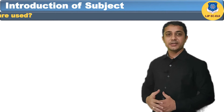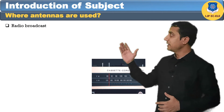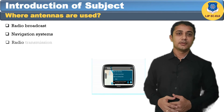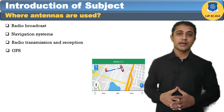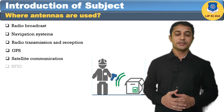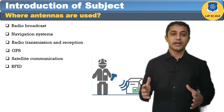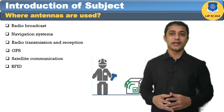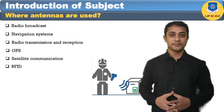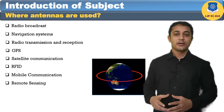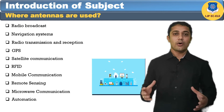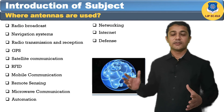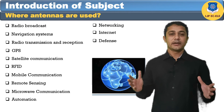Let us see some applications of the antenna where antennas are used. First, radio broadcast. Second, navigation systems. Third, radio transmissions. Fourth, GPS — global positioning system. Fifth, satellite communication. Sixth, RFID — radio frequency identification — which you can find in various shopping malls where clothing or heavy items have a tag attached, removed at the time of billing. Then mobile communication, remote sensing, microwave, automation, networking, internet, and defense. These are the various applications where the antenna is used for the betterment of life.